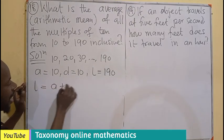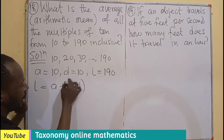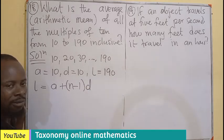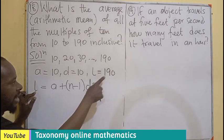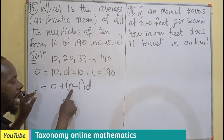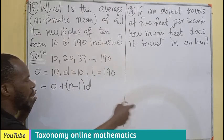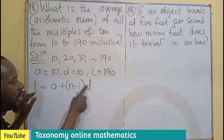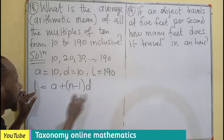So, L equals A plus N minus 1, D. You can remember this formula, right? Where the L is the last term, N is the number of terms in the sequence, A is the first term, D is the common difference.